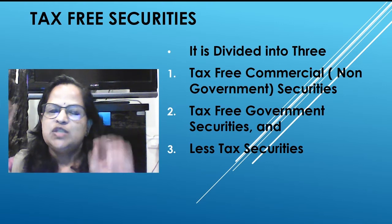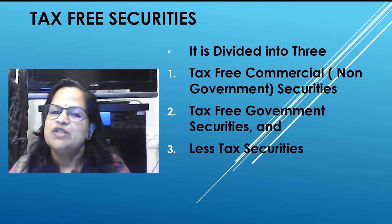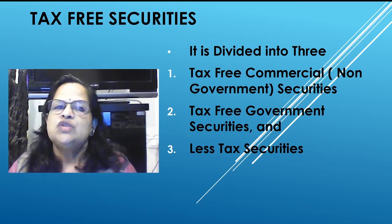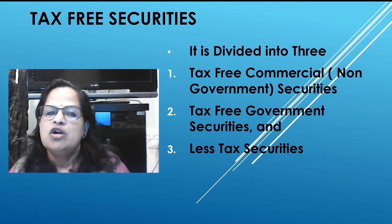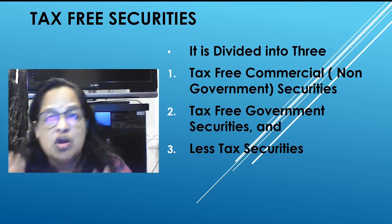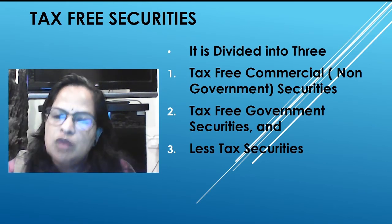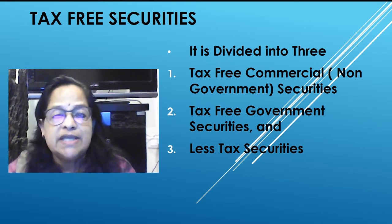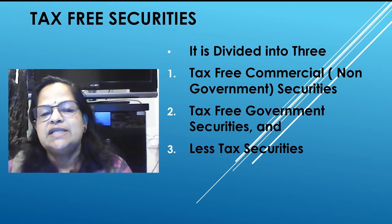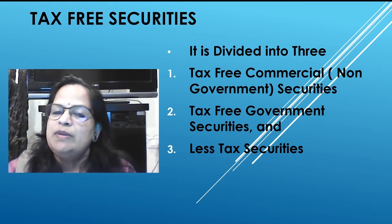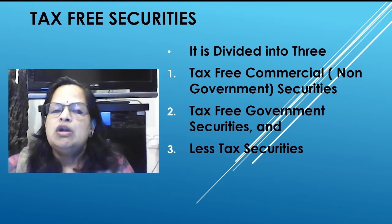Tax-free securities are divided into three categories: tax-free commercial securities (issued by companies, non-government, always taxable), tax-free government securities (issued by government, exempted from tax), and less-tax securities. For less-tax securities, TDS is paid by the issuing authority — if issued by a company, the company pays TDS; if issued by the government, the government pays TDS.